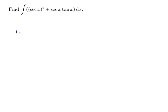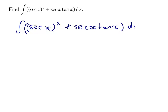All right, so the integral of sec x squared plus sec x tan x dx. Now sec x squared is the derivative of tan x, so if I integrate it, I'll get tan x.